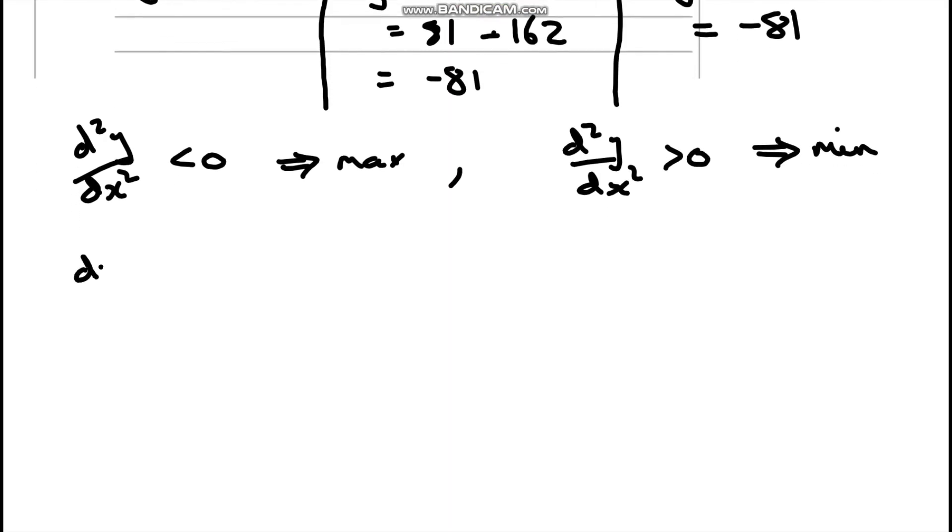So from above we have dy by dx equals 4x to the 3 take away 36x. So d squared y by dx squared is going to be 12x squared take away 36.